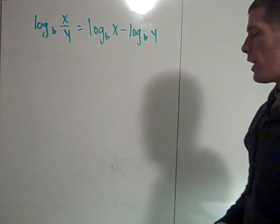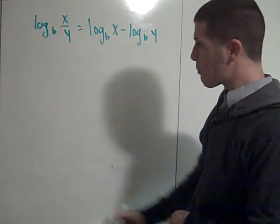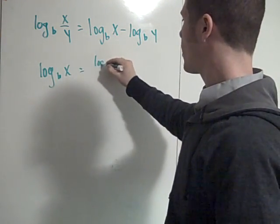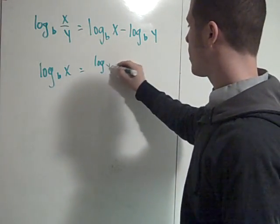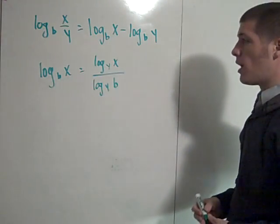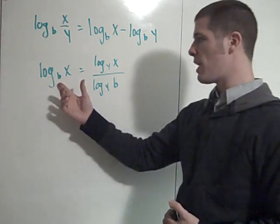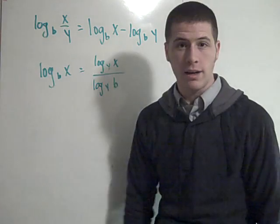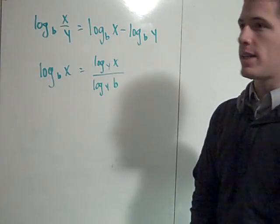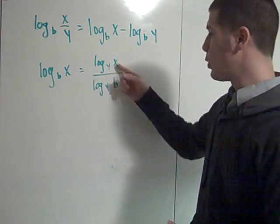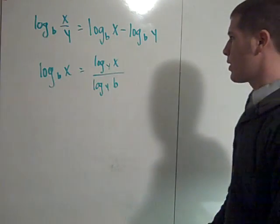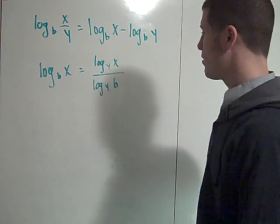That's the quotient property. The change of base formula, which is really neat, says that log base b of x is equal to the log base y of x divided by the log base y of b. Basically, it says you can take the logarithm of any base and change that base to whatever you want. Normally you let y be either 10 or the natural base e, simply so you can use your calculator, but you can really change the base to anything — 100 million, or 0.001. It's just a neat formula.